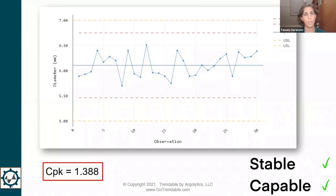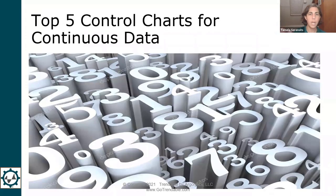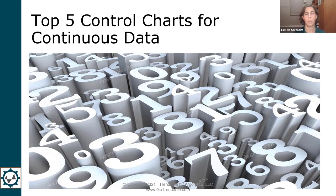There are actually several types of control charts out there to choose from. Tonight I want to focus on the top five control charts used for continuous data. Continuous data are generally measurements you're taking on the part or process — numbers, but not all numbers are continuous data.